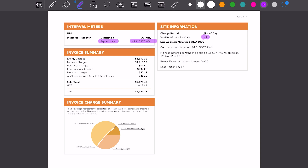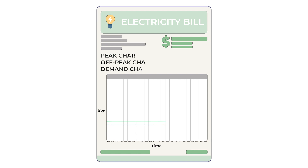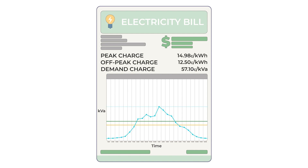We also have this highest demand period of 165 kVA, recorded on the 17th of January at one o'clock in the afternoon. As with residential demand charges, the peak demand is the highest usage in the month at any given time — the highest amount of power draw at any given moment in that month. For this client, it's 165 kVA.